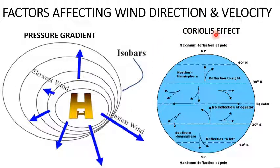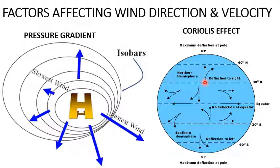The second factor is Coriolis effect. The effect which is created due to the earth's rotation is known as Coriolis effect. Due to this effect, things are deflected from their actual position towards the right in the northern hemisphere and towards the left in the southern hemisphere. So winds or ocean currents, because they are moving, are deflected towards the right in the northern hemisphere.